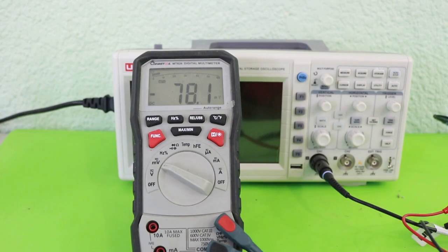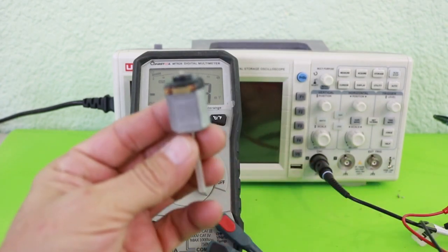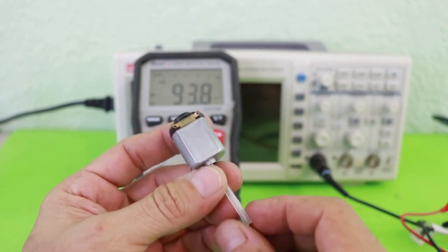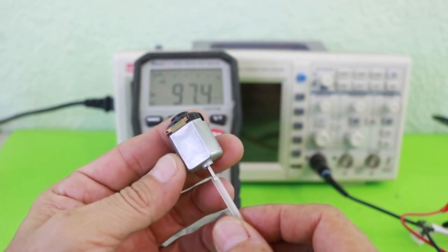Hello, welcome to Ludic Science. In this video I will show you how to convert a small DC motor, such as this one, into a three-phase alternator.